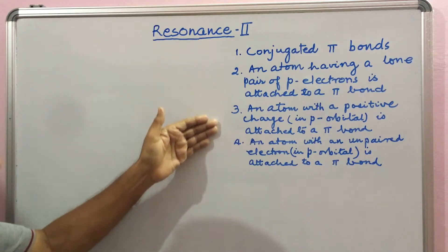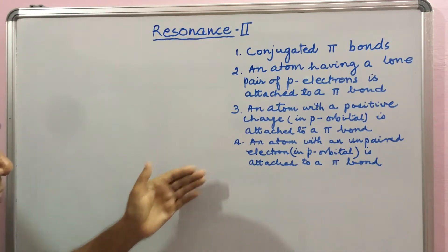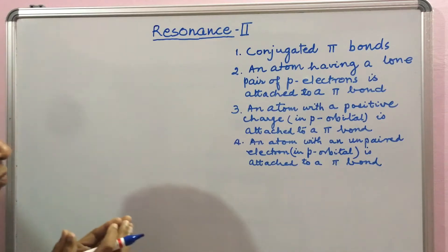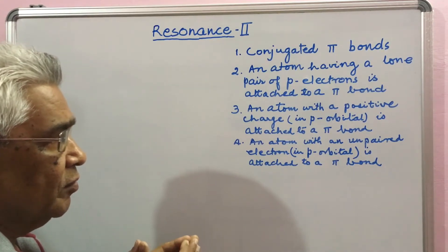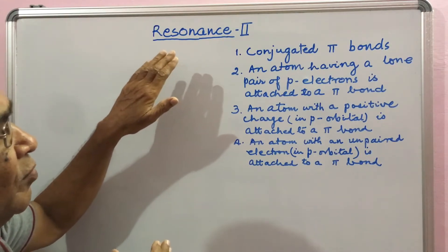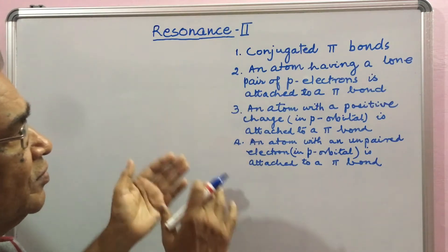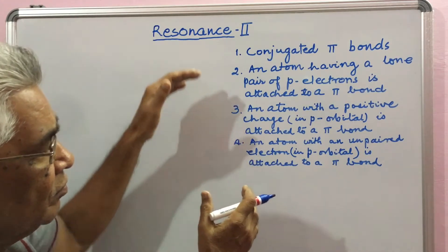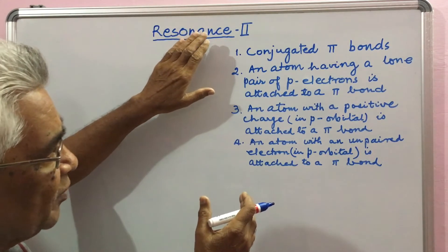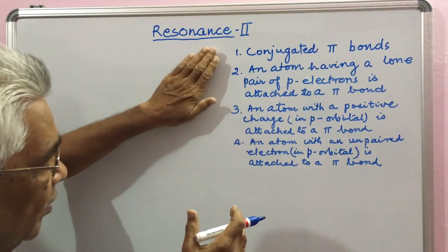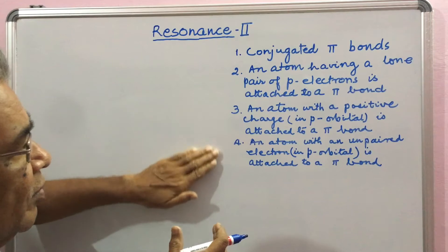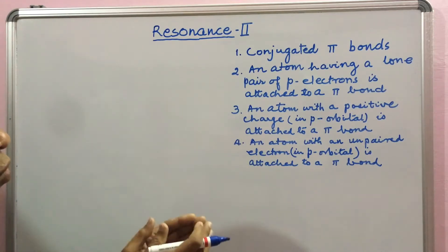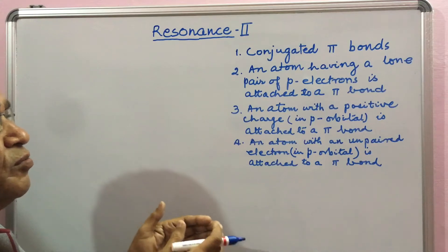There are four structural features. If any one of these is present in the molecule, resonance will be displayed. The main condition is the presence of at least three parallel P orbitals on adjacent coplanar atoms. All of these features satisfy that situation of at least three parallel P orbitals. Let us see them one by one and learn how to write the resonating structures for each molecule.